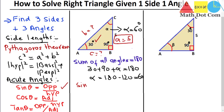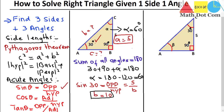Sin 30 = opposite / hypotenuse = 5 / b. We know that sin 30 = 1/2, so 1/2 = 5/b, which gives b = 10. So the hypotenuse b equals 10.